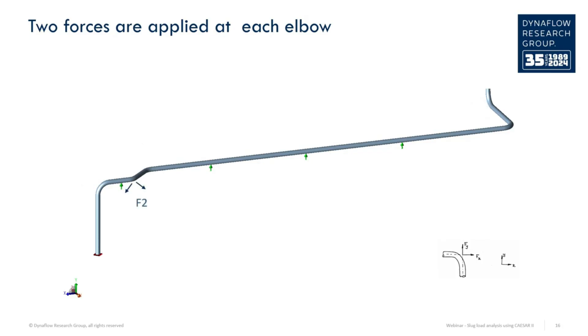This gives non-conservative results. In a quasi-static Caesar II analysis, F1 to F9 are therefore used separately to model the fact that the slug hits one elbow at a time.